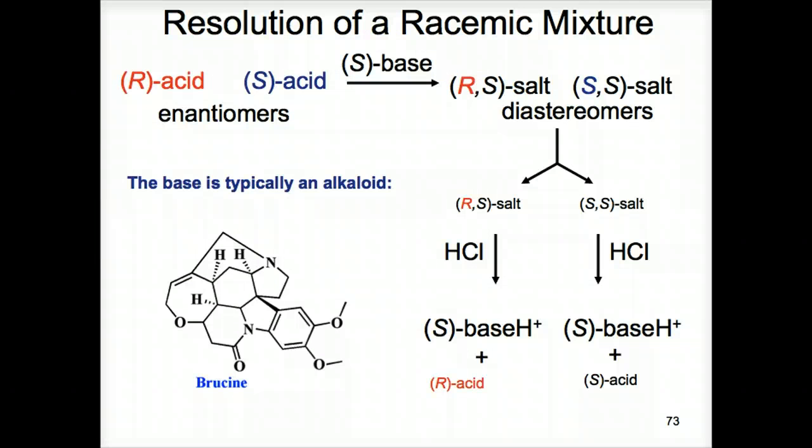Let's look at the resolution of a racemic mixture. Why can't enantiomers be separated by the usual separation techniques such as fractional distillation or crystallization that we use in the laboratory? They cannot because they have identical boiling points and solubilities which make them distill or crystallize at the same time. The separation of enantiomers is called the resolution of a racemic mixture.